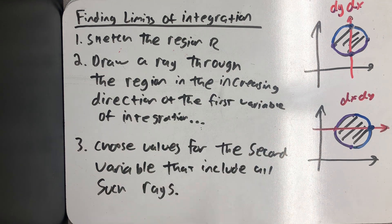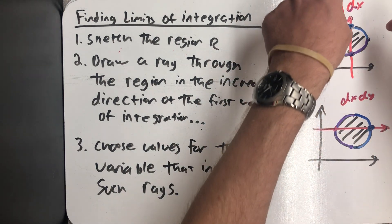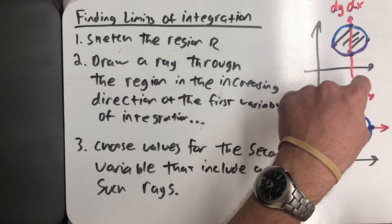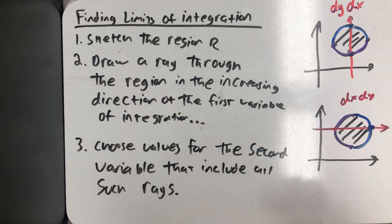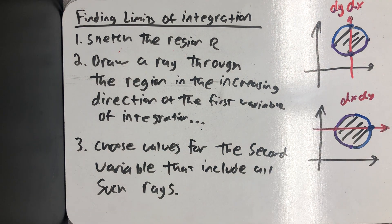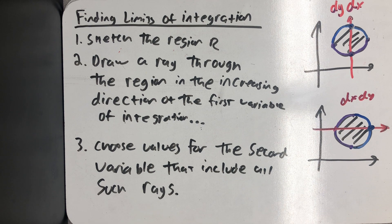We draw our region, and I've drawn two different pictures here, one where I would integrate with respect to y and then x, and one where I would integrate with respect to x and then y. Then we're supposed to draw our array through the region in the increasing direction of the first variable of integration.